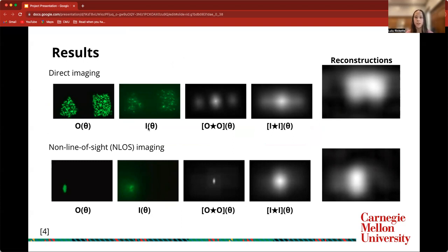So for the direct imaging case, the autocorrelation of the object O of theta has a sharp peak in the center with two peaks on either side. And the autocorrelation of the image I of theta follows a similar pattern where there's a sharp peak in the middle and slight peaks on the left and right sides, although it is a little bit noisier and hard to see those additional peaks.